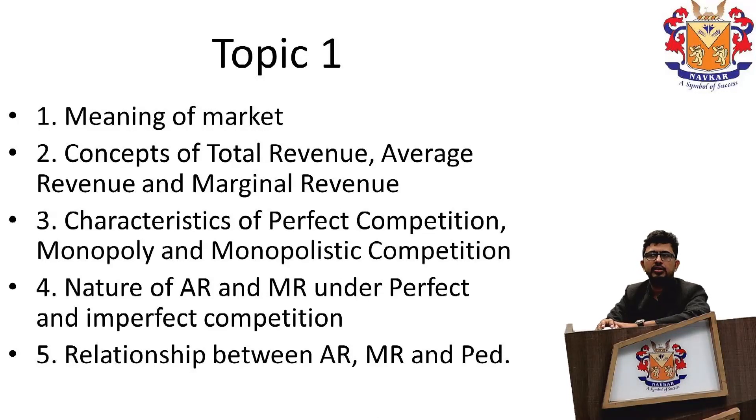The first is meaning of market. Second is concepts of total revenue, average revenue and marginal revenue. The third point is characteristics of perfect competition, monopoly and monopolistic competition. The fourth is the nature of average revenue and marginal revenue under perfect and imperfect competition. And the fifth is the relationship between average revenue, marginal revenue and price elasticity of demand.